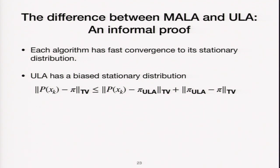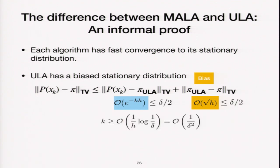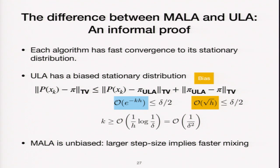ULA and MALA both converge to their stationary distribution, but ULA has a bias of order square root of h, where h is the step size. Even though ULA converges quickly to its stationary distribution, the bias always remains and cannot be removed. To make the bias smaller than the target accuracy, you must take a very small step size, making the number of steps polynomial in accuracy. MALA is unbiased, so you can take a larger step size and achieve faster mixing. Please come to our poster — more attention needs to be paid to Metropolis-adjusted algorithms.